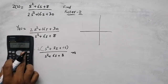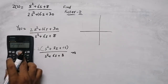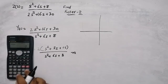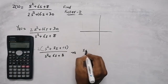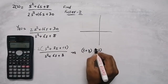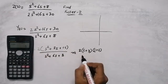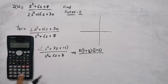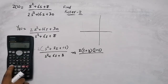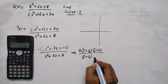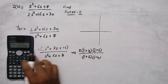Solving in the calculator — for the numerator, it's a second-degree equation with coefficients 1, 8, 15, giving factors (s + 3)(s + 5). For the denominator, the coefficients are 1, 6, 8, giving poles at (s + 2)(s + 4).